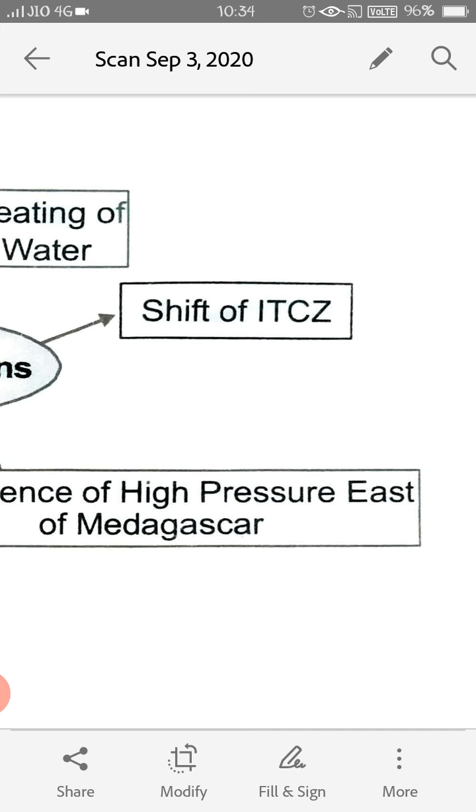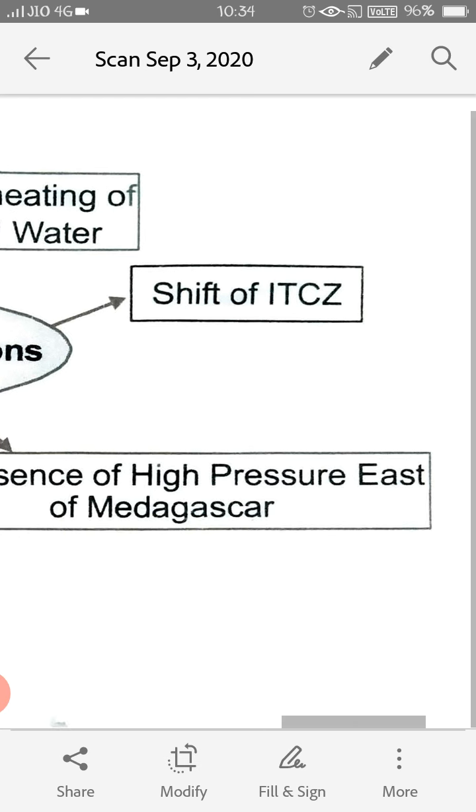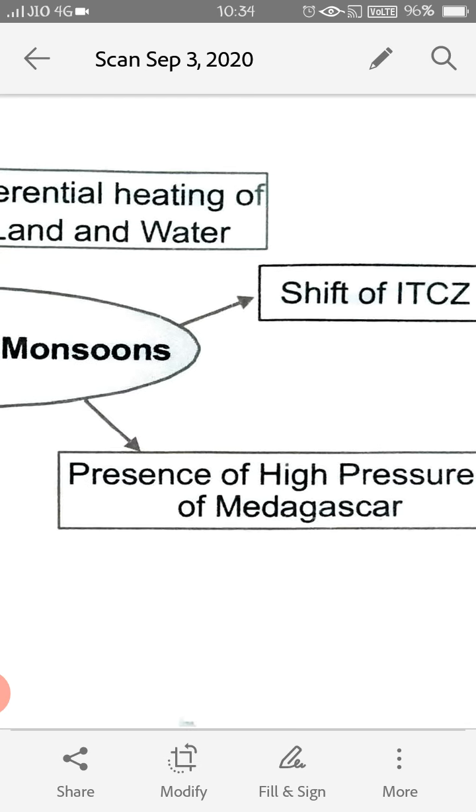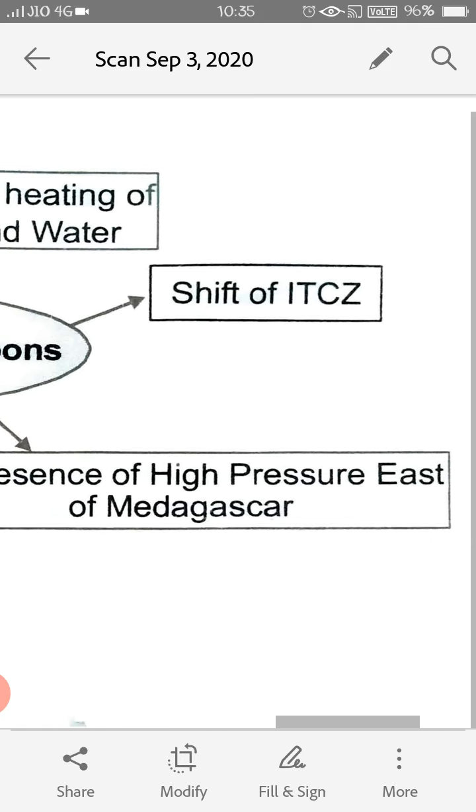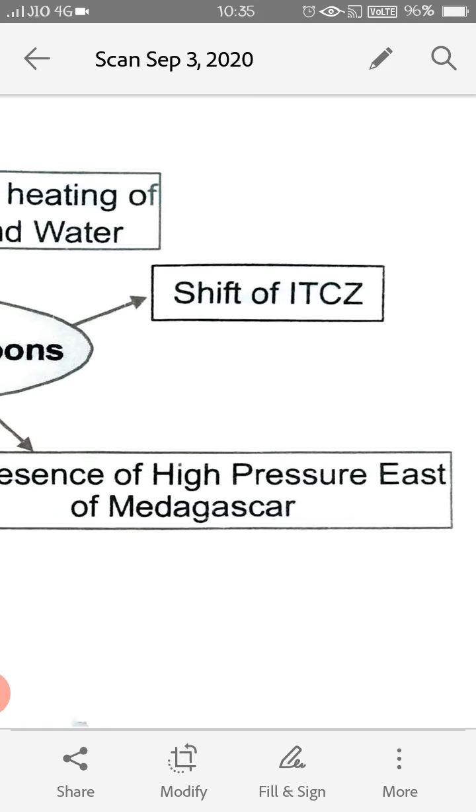As I have already explained, our southern states of India are very close to equator, they are eight degrees north from the equator. And then the third one, the third heading will be the presence of high pressure east of Madagascar.